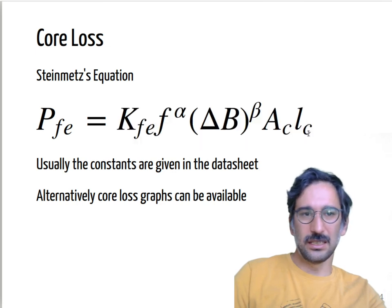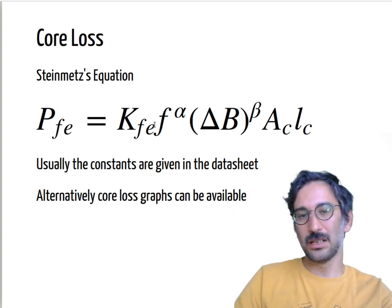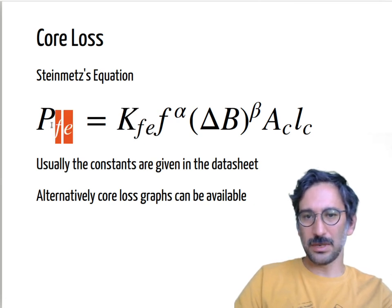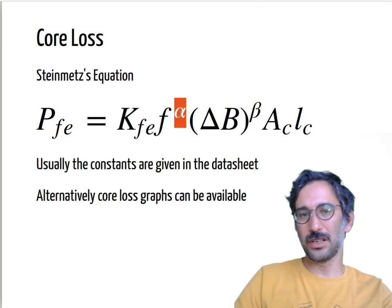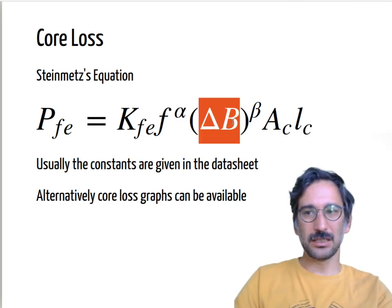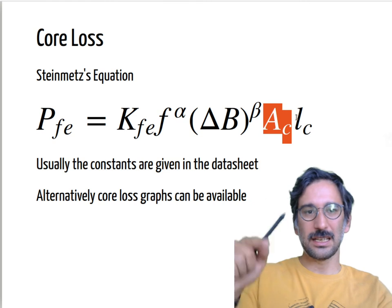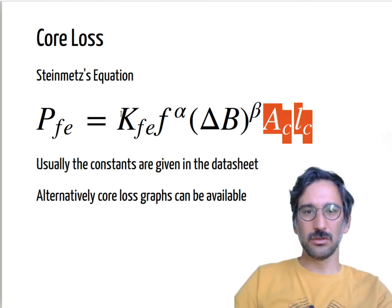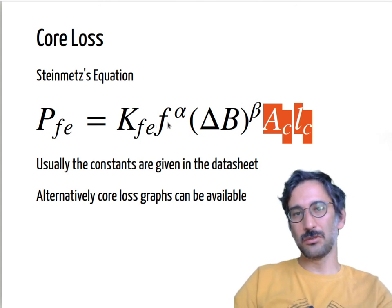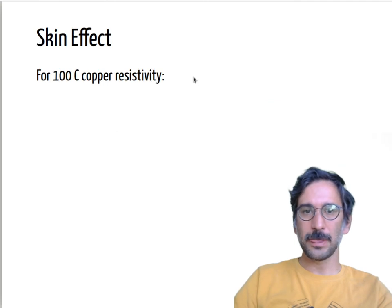When data sheet values don't cover your exact operating frequency, the Steinmetz equation is used: P = k · f^α · B^β · A_c · l_c, where k, α, and β are material constants found in the data sheet or references, f is switching frequency, B is operating flux density, and A_c · l_c is essentially the core volume. Once you know those constants, your switching frequency, and your flux density, you can calculate all core losses.